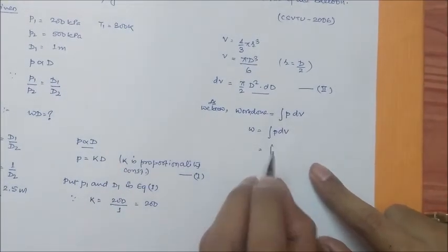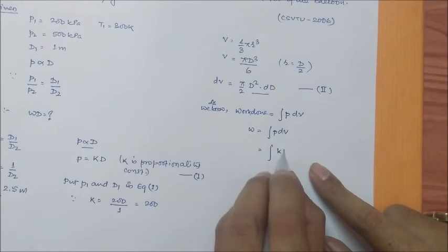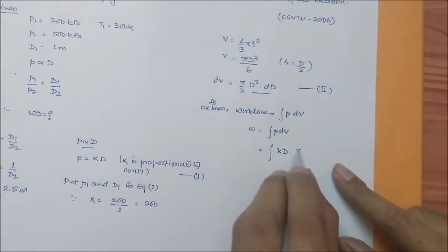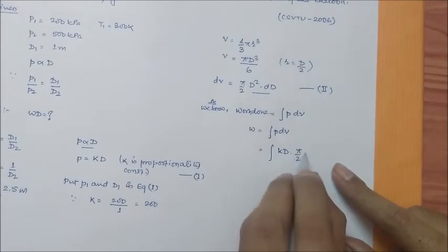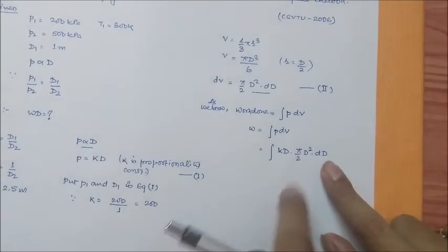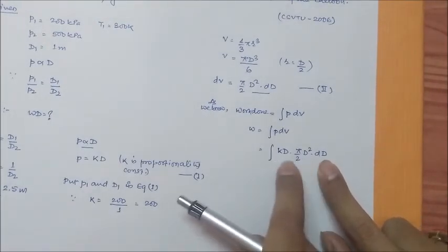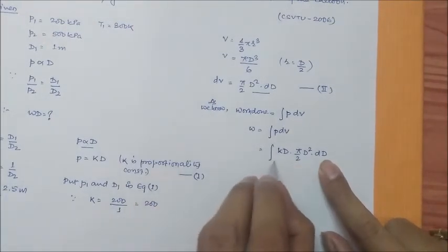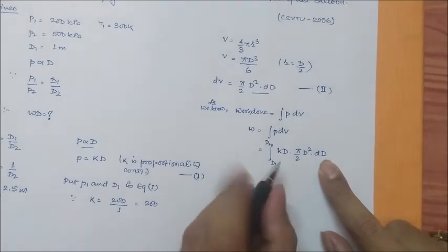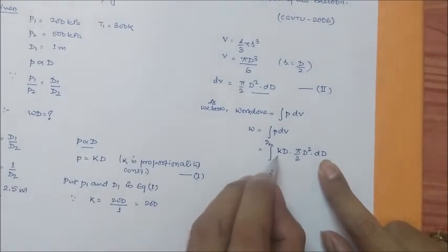So integral KD π/2 D² dD. As you see, the only variable is D, so our limit will be from D₁ to D₂. And we also know the value of K and the value of D₁ and D₂.